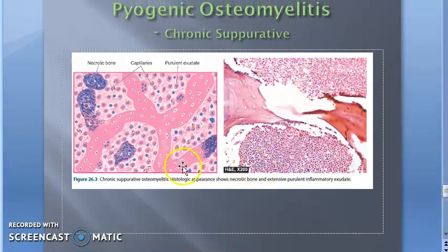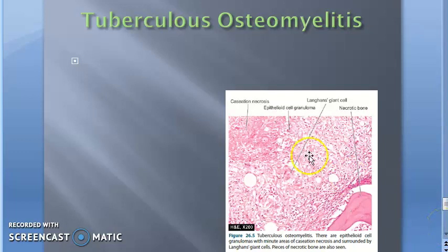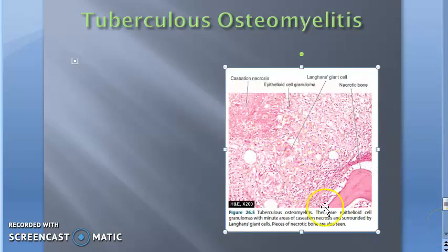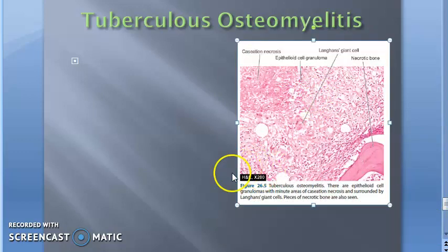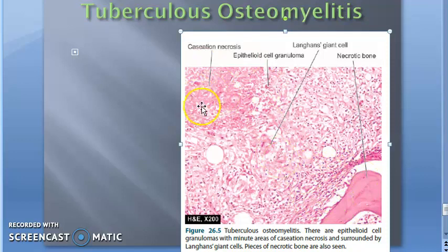Here they have shown chronic suppurative osteomyelitis — we'll look at all the details. Then we will look at tuberculosis osteomyelitis. For tuberculosis osteomyelitis, you see a typical caseating granuloma with Langhans giant cells and epithelioid cells — caseous necrosis, Langhans giant cells, epithelioid cell granuloma — the same findings, nothing different from TB elsewhere.